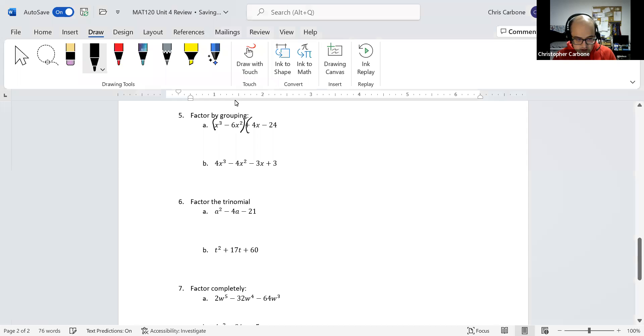So to group those, I'm going to separate each of these out. For x cubed minus 6x squared, we're going to factor out an x squared times x minus 6.